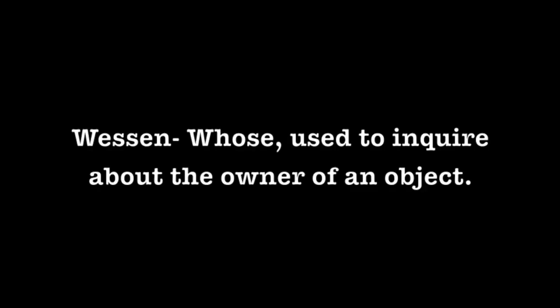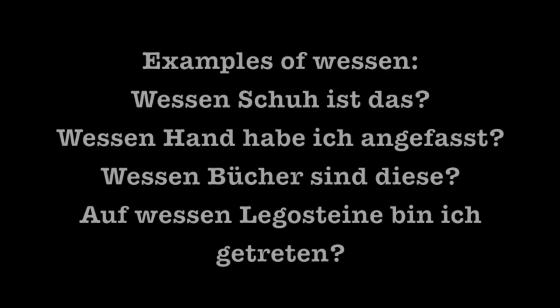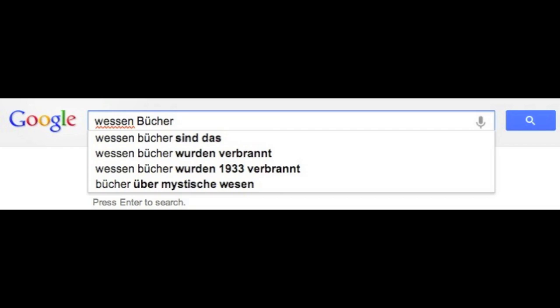The last form of 'who' on our list is Wessen, which means 'whose'. It's used to inquire about the owner of an object. Examples: Wessen Schuh ist das (whose shoe is this?), Wessen Hand habe ich angefasst (whose hand did I touch?), Wessen Bücher sind diese (whose books are these?), Auf wessen Legosteine bin ich getreten (on whose Lego blocks did I walk?). A Google search for 'wessen Bücher' gives: Wessen Bücher wurden verbrannt and Wessen Bücher wurden in 1933 verbrannt (whose books were burned in 1933?), and also an unrelated result: Bücher über mystische Wesen (books about mystical beings).